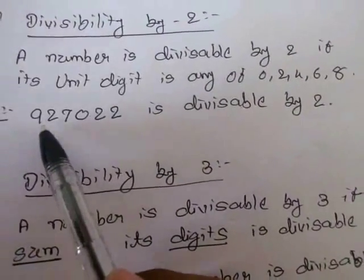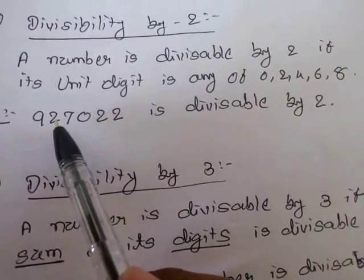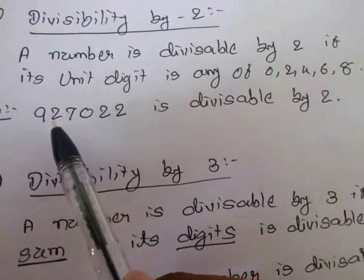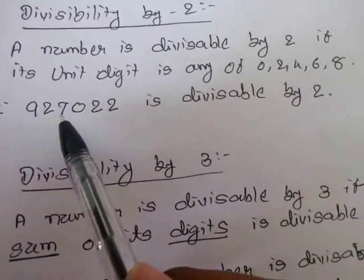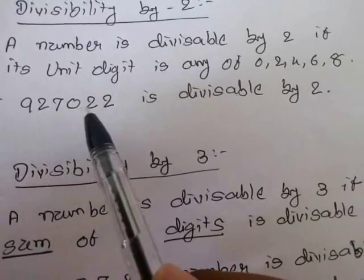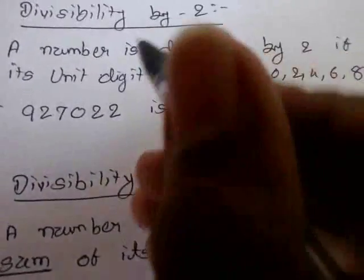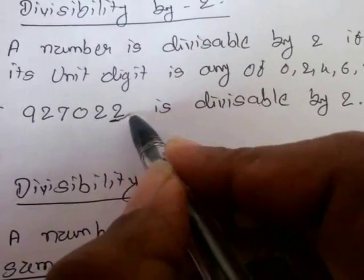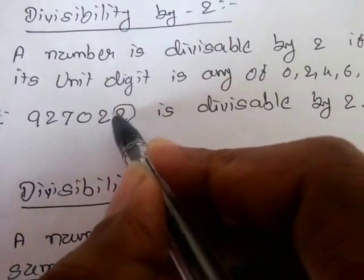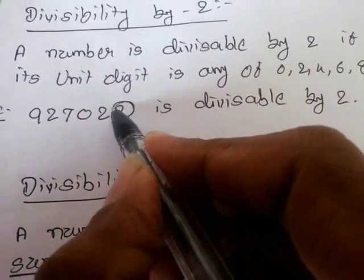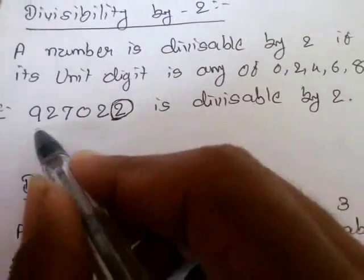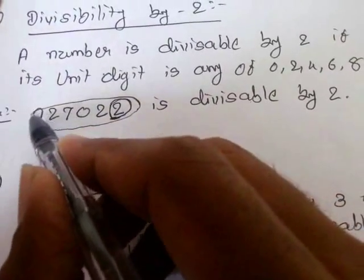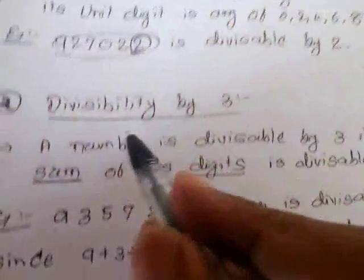Let's take an example. The number 27,022 is divisible by 2 since the unit's digit is 2.